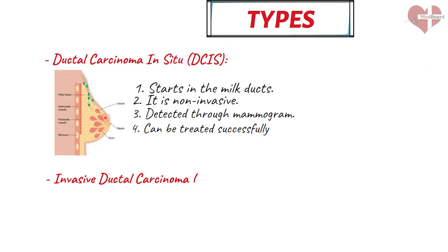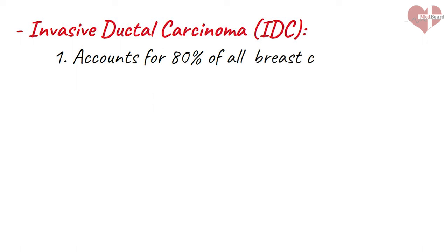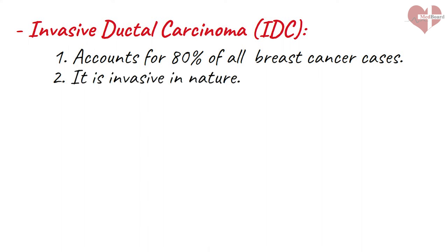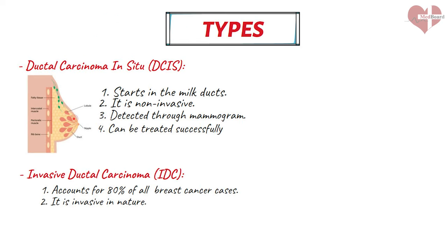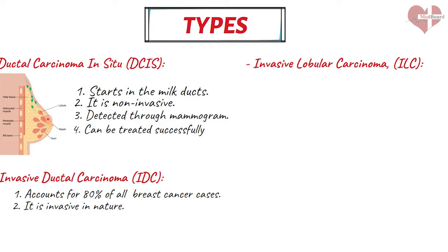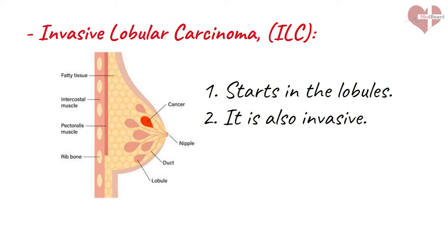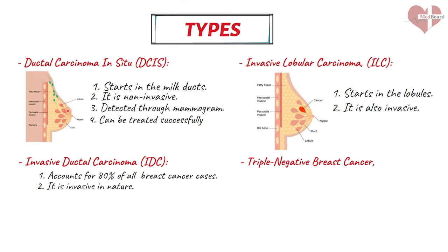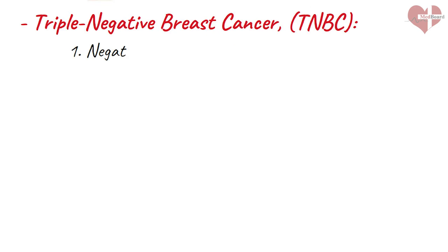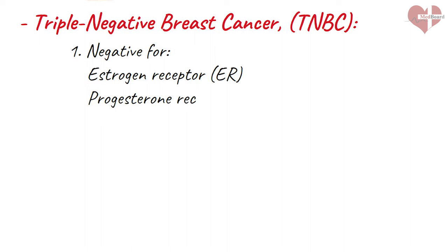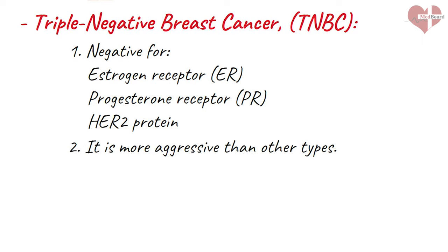Invasive ductal carcinoma (IDC) is the most common type of breast cancer, accounting for about 80% of all breast cancer cases. IDC starts in the milk ducts but then invades the surrounding breast tissue and can spread to other parts of the body if left untreated. Invasive lobular carcinoma (ILC) starts in the lobules, which are the milk-producing glands in the breast, and can also invade surrounding tissue and spread. Triple negative breast cancer (TNBC) is negative for estrogen receptor (ER), progesterone receptor (PR), and HER2 protein. TNBC tends to be more aggressive than other types and is often treated with chemotherapy.